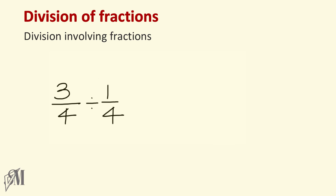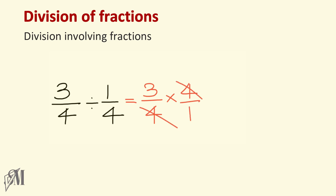Three over four divided by one over four: write three over four as it is, replace division with multiplication, and write the reciprocal of one over four, which is four over one. The fours cancel, and our final answer becomes three.